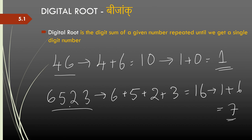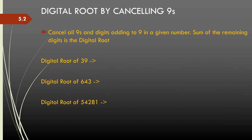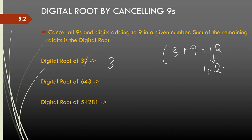Now there is an easier way of calculating digital roots, which is by just cancelling out all the 9s or digits adding to 9 in the given number. For example, if I have 39 and I want the digital root of 39, all I have to do is cancel out the 9 and the digital root is 3. You can verify: 3 plus 9 is 12, and 1 plus 2 is 3.